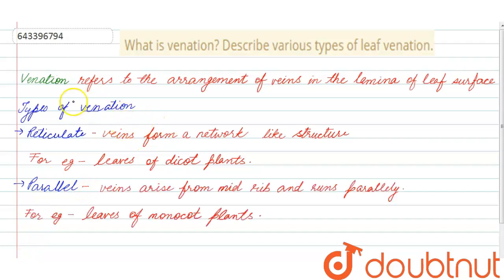In this question we talked about venation, which refers to the arrangement of veins in the lamina of the leaf surface. We discussed two types: reticulate, where veins form a network-like structure, and parallel, where veins arise from the midrib and run parallelly.